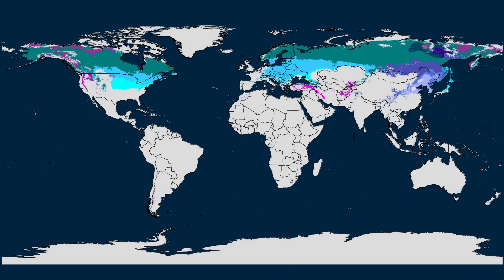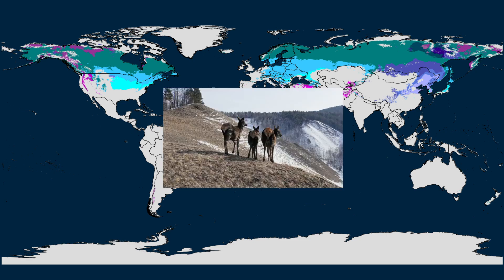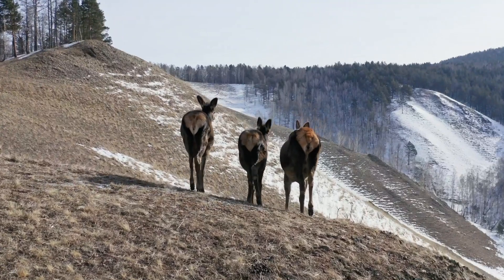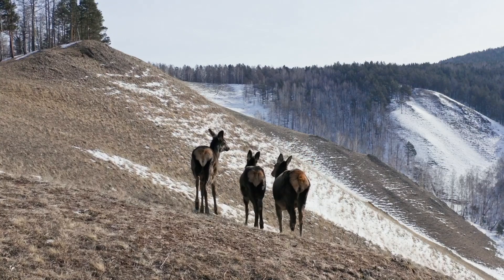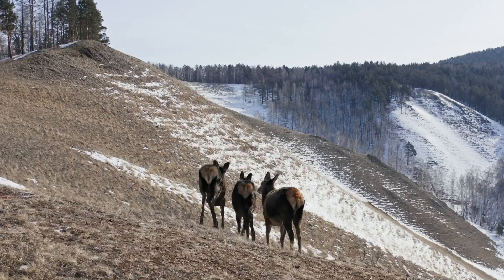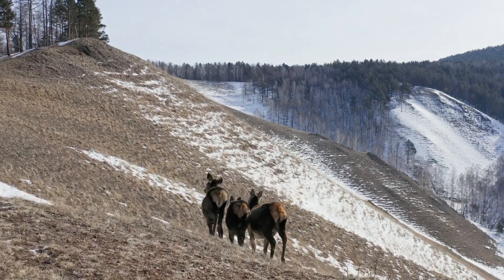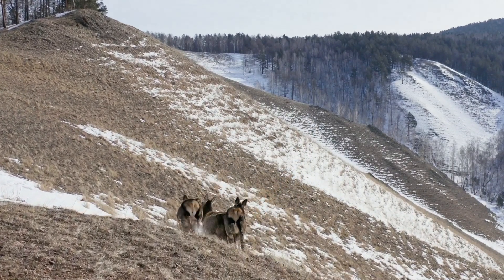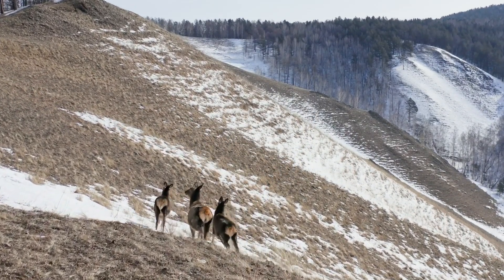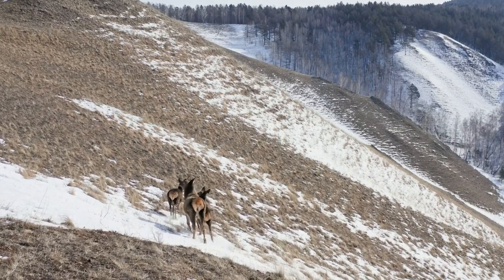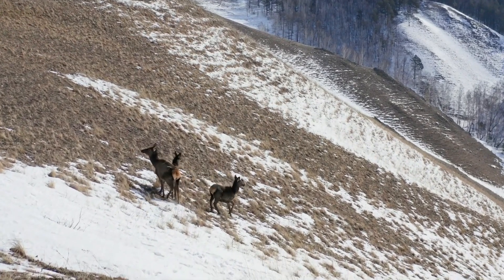The continental climate region is also called the cold mid-latitude region and features a relatively dry climate with warm summers and cold winters. The land is often marked by forests and taigas filled with millions of trees. The continental climate region includes Eastern Europe, Russia, Canada, and Alaska.